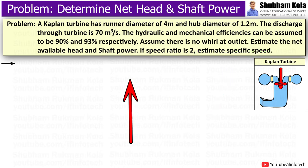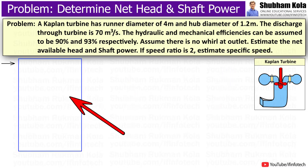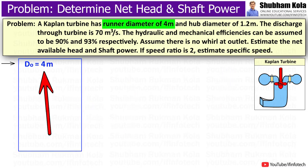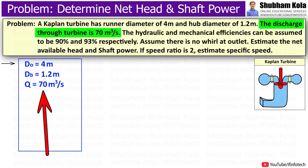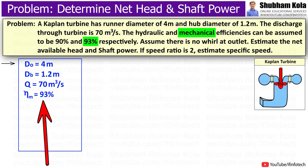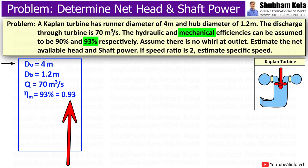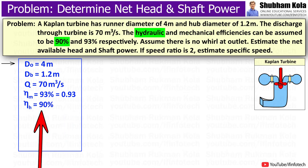To solve this problem, let's write down the given data: outer diameter D_O is 4 meters, hub diameter D_B is 1.2 meters, discharge through turbine Q is 70 cubic meters per second, mechanical efficiency is 93% (i.e. 0.93), and hydraulic efficiency is 90% (i.e. 0.9).